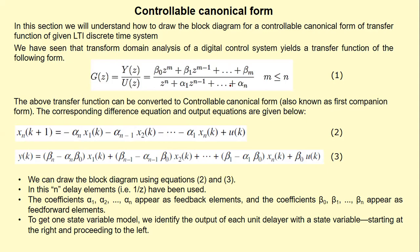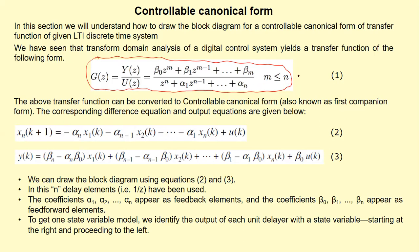A difference equation representing a linear time-invariant discrete-time system, when we apply a z-transform, can be converted to the transfer function. The required transfer function is given by equation number one. By applying the controllable canonical form procedure, which is also known as the first companion form, we can have the state space representation of such a system.